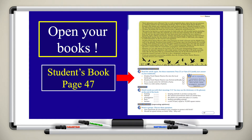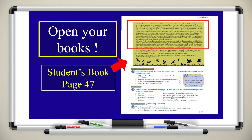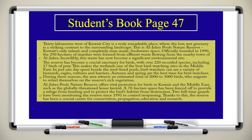Now open your student's book to page 47 and look at the text. Let's read it together: '30 kilometers west of Kuwait City is a truly remarkable place where the low wet greenery is a striking contrast to the surrounding landscape. This is Al Jahra Pools Nature Reserve, Kuwait's only inland and completely man-made freshwater space. Officially founded in 1990, the 250 hectares of marshes were formed from effluent waste flowing from the nearby town of Al Jahra. Incredibly, this waste has now become a significant environmental site. The reserve has become a crucial sanctuary for birds with over 220 recorded species, including 17 birds of prey.'